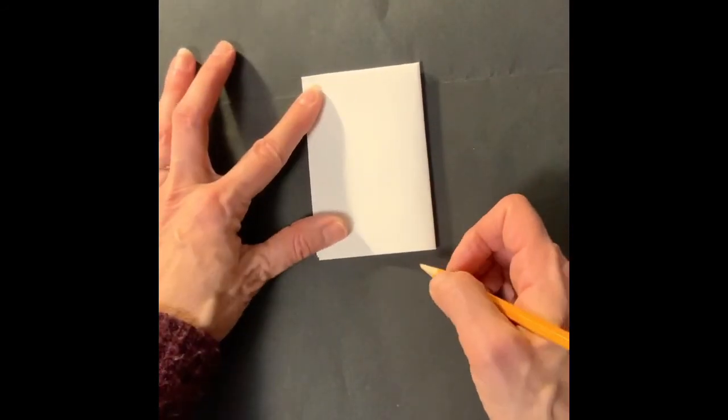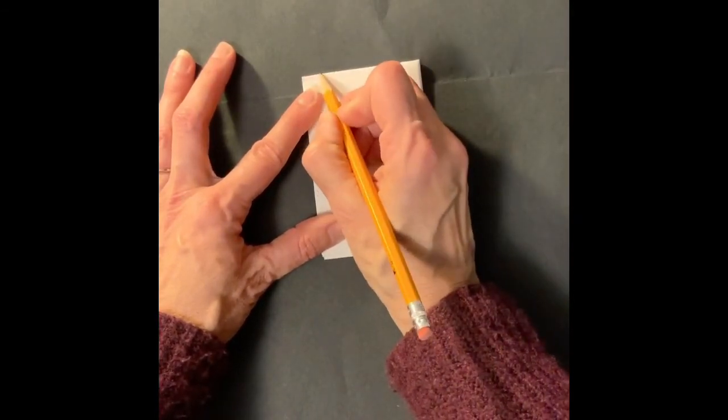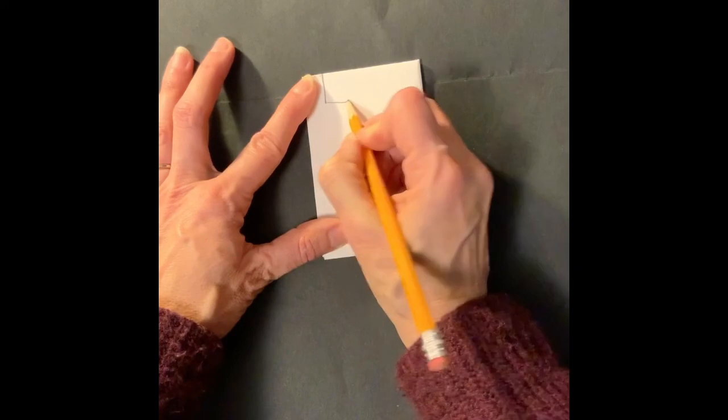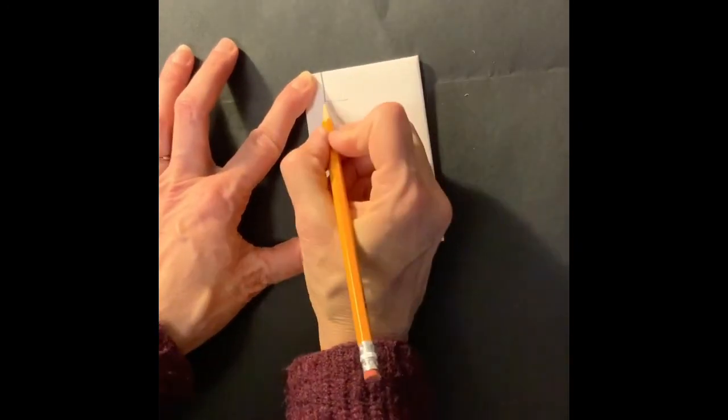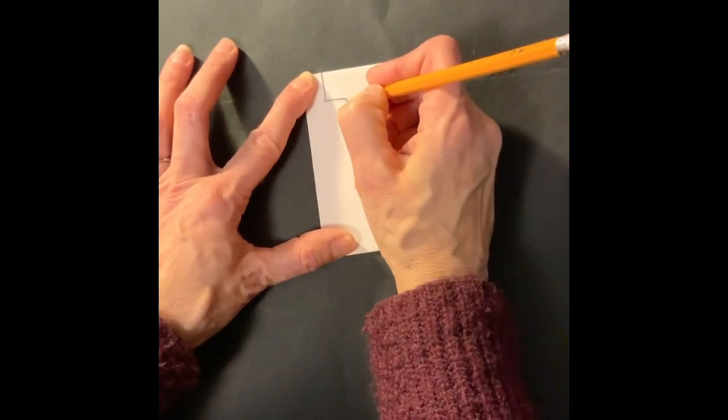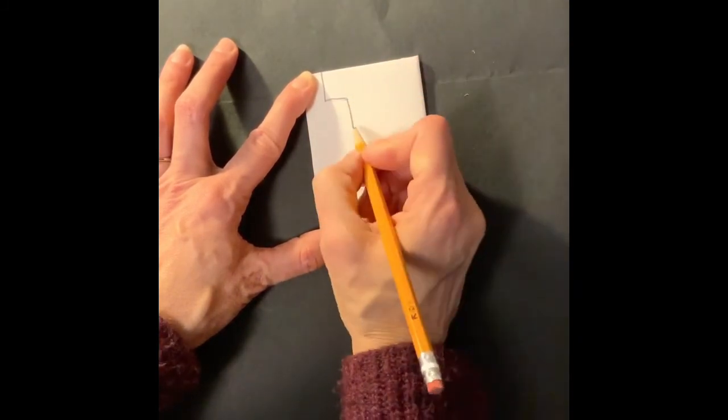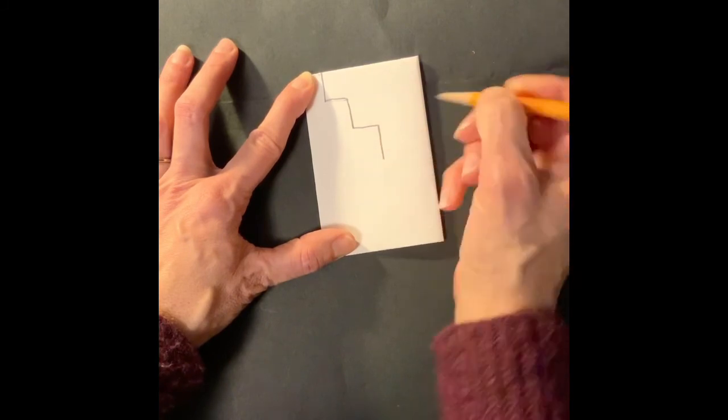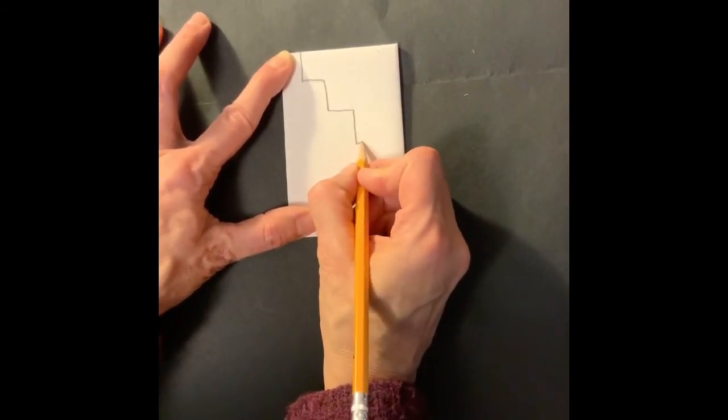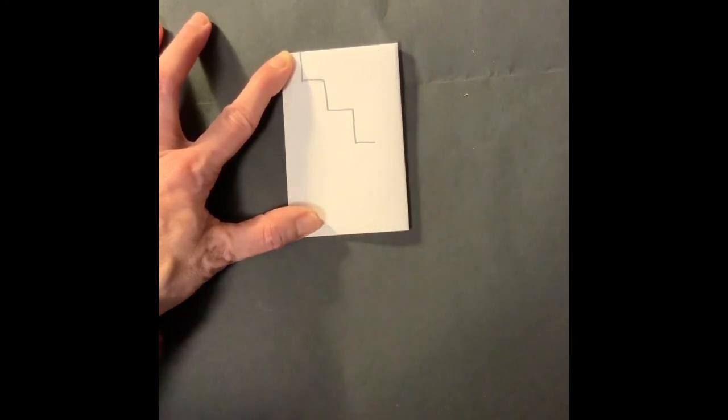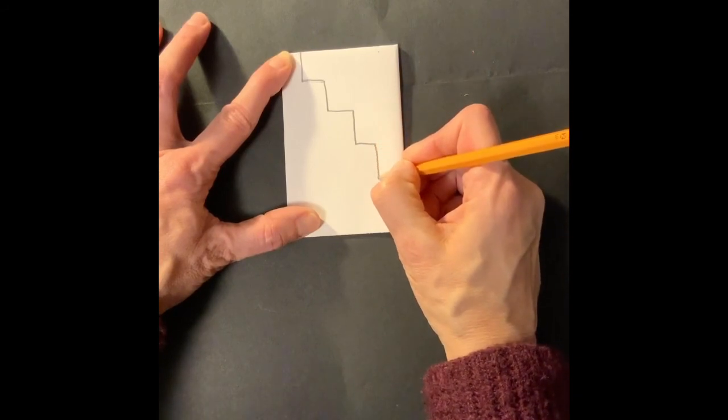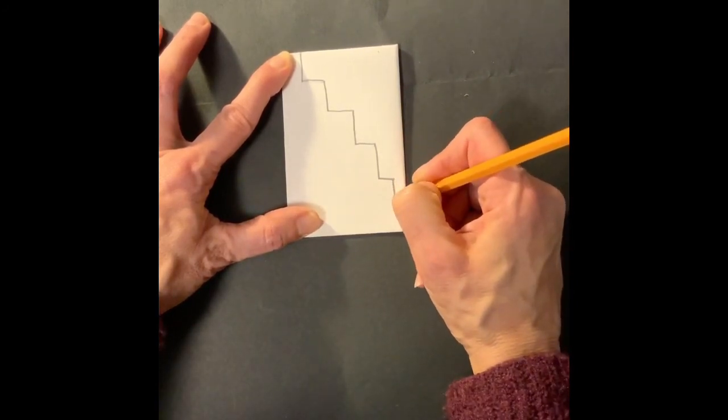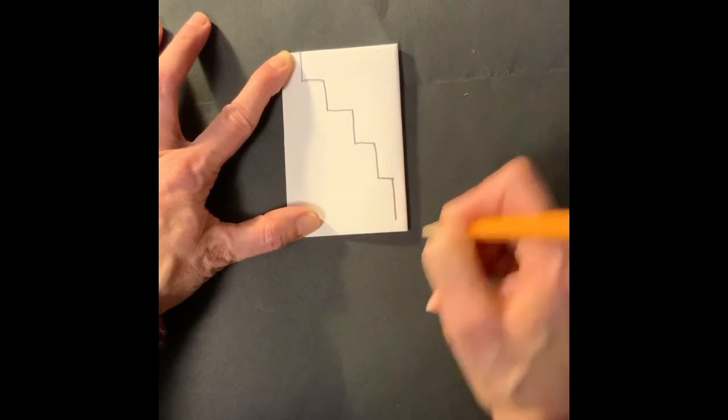Now take your pencil and from the middle fold where there's two folds together, start drawing a vertical line to a horizontal line and repeat this so that you end up with something that almost looks like steps going down your paper. You can use a ruler if you're nervous about making these straight. You're going to go all the way down but you're not going to touch the fold or the bottom of your paper. If you do, your paper will fall apart.